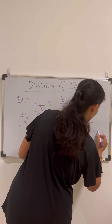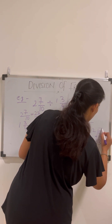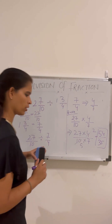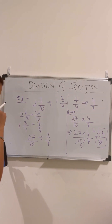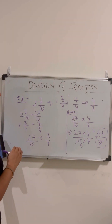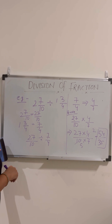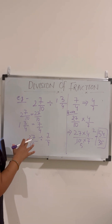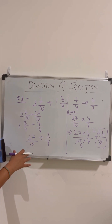So 54/35 is our solution. I hope you understand the concept of how to solve division of fractions.